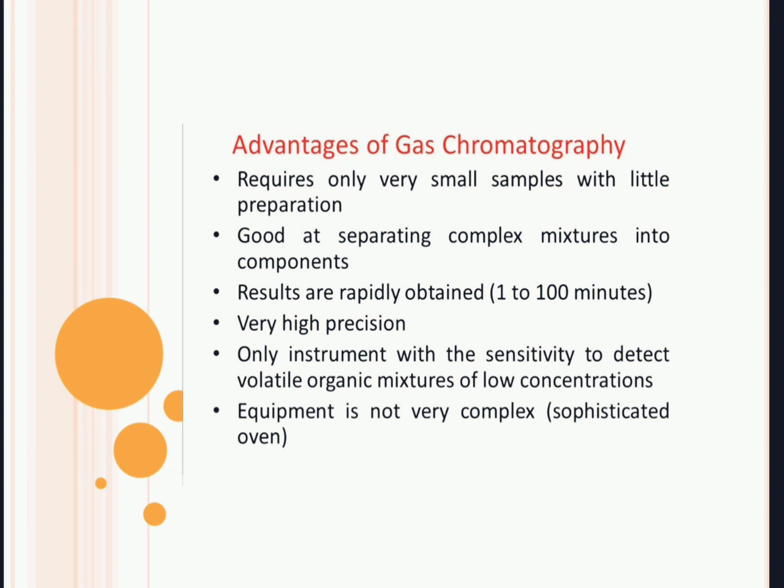The advantages of gas chromatography include: it requires a very small amount of sample — in microliters of volatile liquids. It is good at separating complex mixtures into components. Results are rapidly obtained in 1 to 100 minutes. The instrument gives precise readings. It is the only instrument with sensitivity to detect volatile organic mixtures at low concentration. The equipment is not very complex. It is used for various purposes — to identify volatile components, pesticides, halogen-containing compounds, and alcohols. It also has wide applications in forensic science.